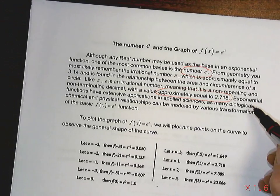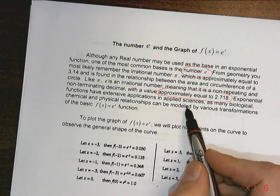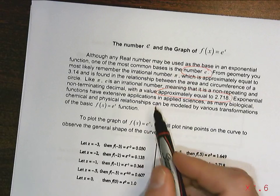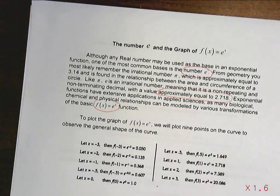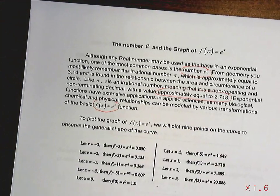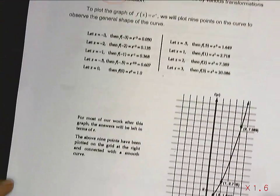This number e was found in the applied sciences. Many biological, chemical, and physical relationships in the real world are modeled by this function. So that's where this comes from. It wasn't invented. It was more discovered than anything else.